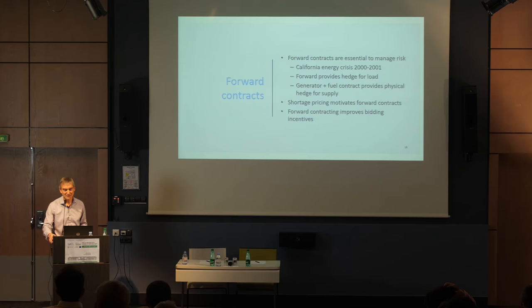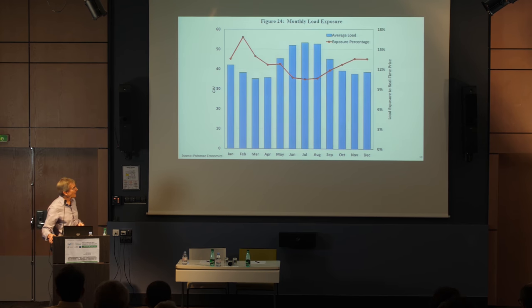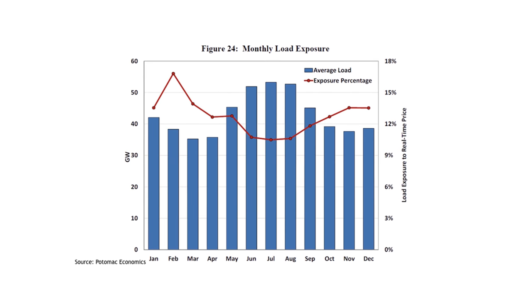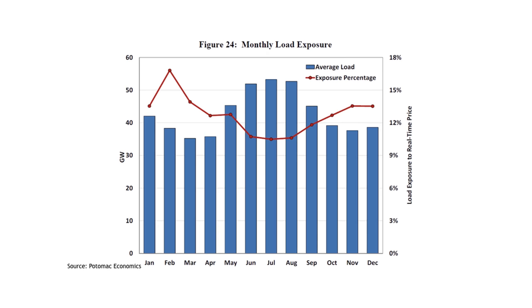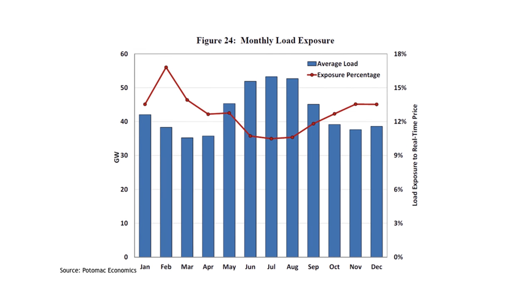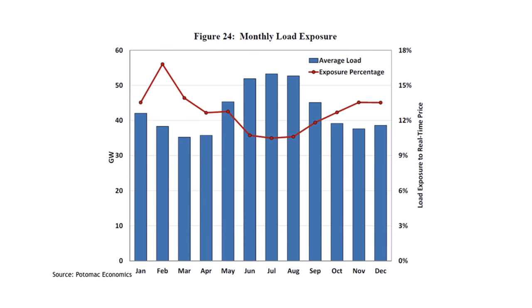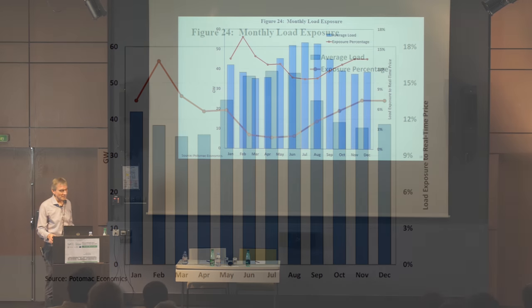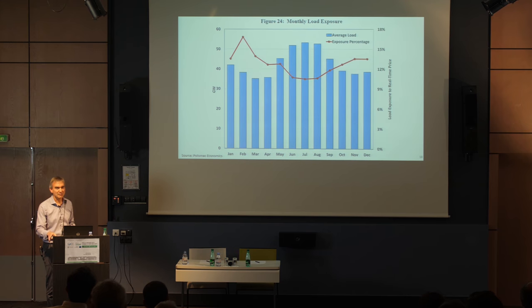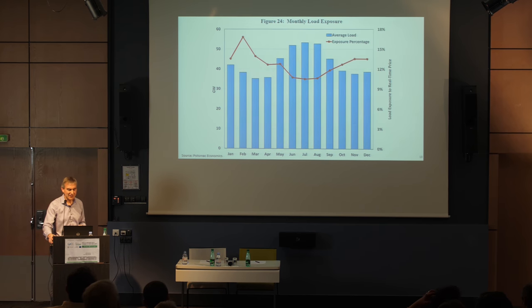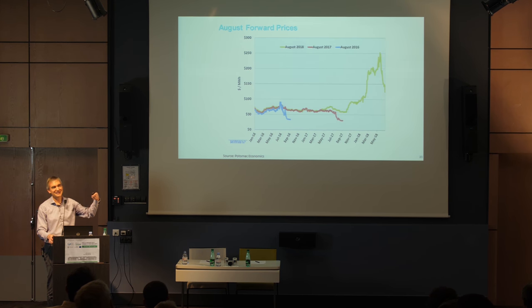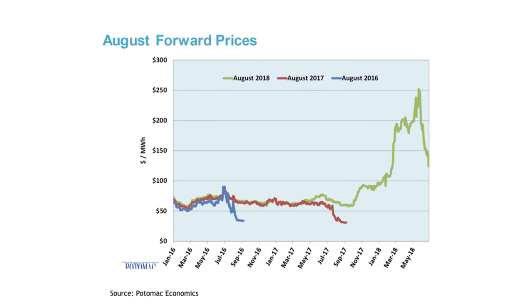Forward contracting also greatly improves bidding incentives. The exercise of market power becomes much less of a problem when parties are in balanced positions — they have no incentive to exercise market power. Only about 10% in summer months is unhedged for load, and it's probably much less than that given bilateral contracts they hold. Forward contracting also provides a very good price signal that motivates good incentives for behavior.